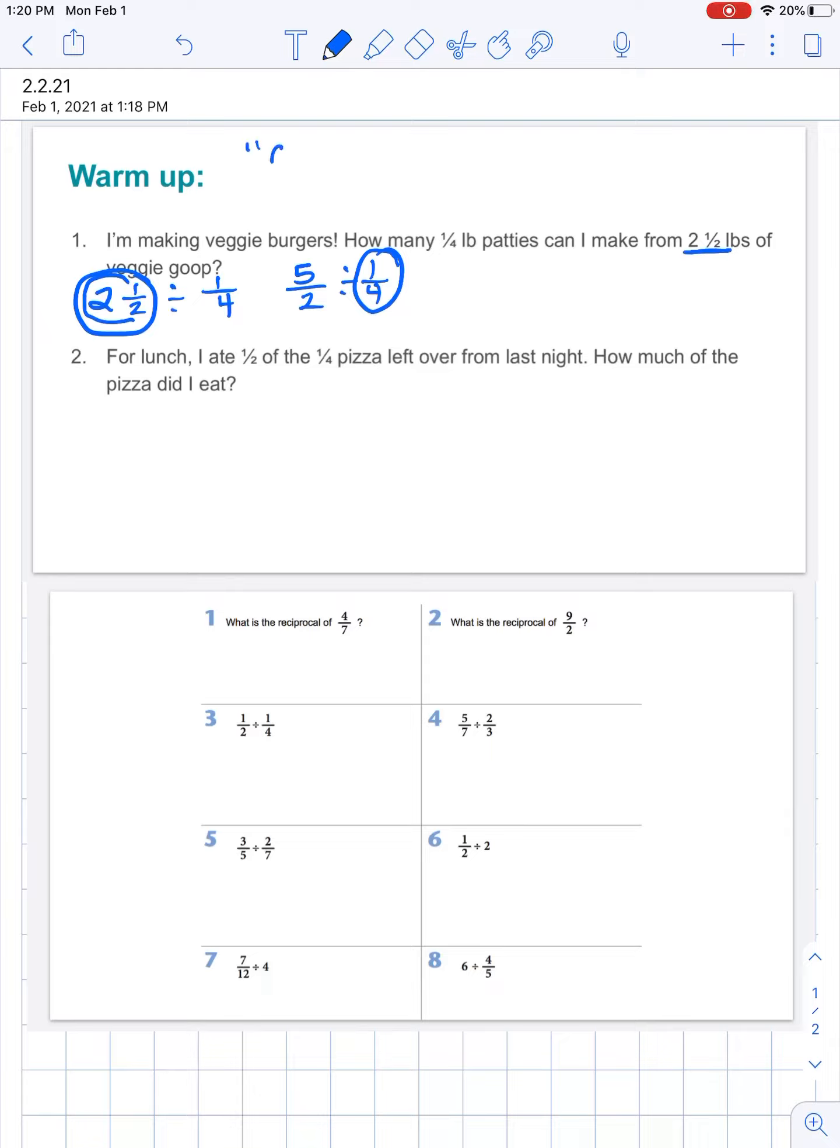Now sometimes when we see multiplication problems, we'll see them written like this, like four times two. When you see that dot, that means multiply. Four times two is eight. So first thing we're going to do: copy five over two, dot multiply, and then flip. We're going to turn that one fourth into four over one. Now five times four is twenty, two times one is two.